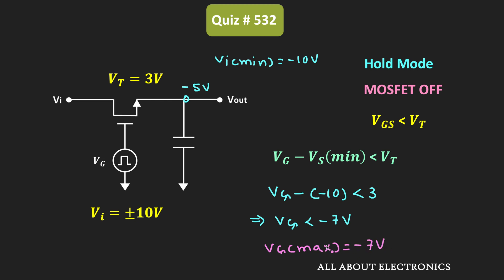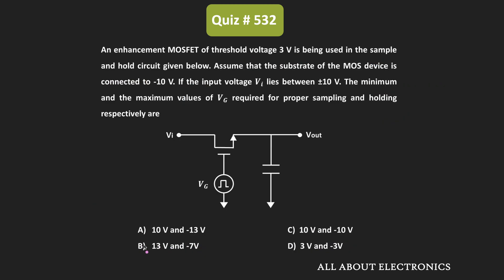So to summarize: during the sampling time, the control voltage VG should be at least 13V, meaning VG_min = 13V. During the hold period, the control voltage VG should not be more than -7V, meaning VG_max = -7V. This is the correct answer for the given question.